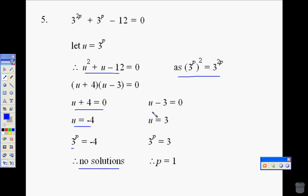u minus 3 would equal 0 from this part. So again, u would equal 3. 3 to the power of p is equal to 3 to the power of 1. So p would equal 1 from that. So there's our answer. But only p is equal to 1 is our only solution to that question.